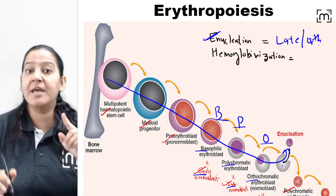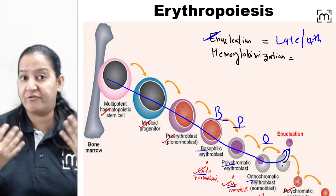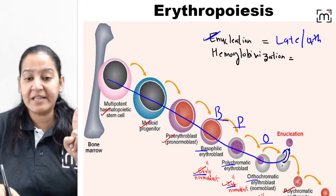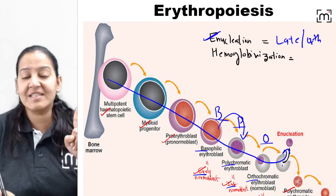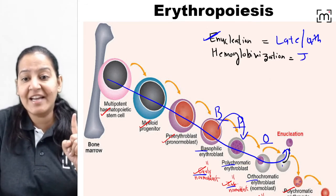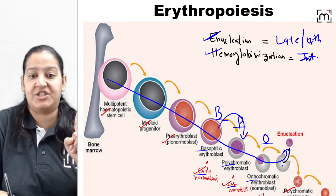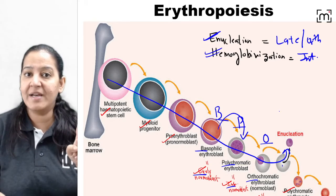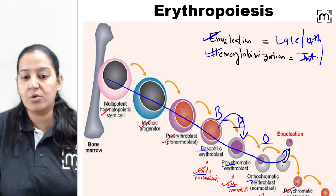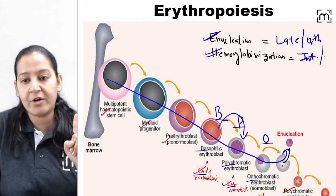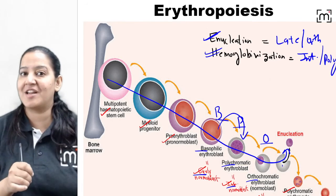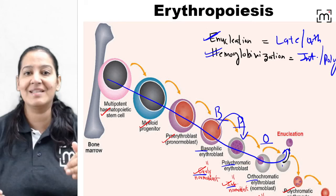The second question: hemoglobinization takes place at which stage? You can see the change in color of the cytoplasm takes place at intermediate normoblast stage. So hemoglobinization takes place at the intermediate — also known as polychromatic normoblast — stage. These are the important answer cues from this series.